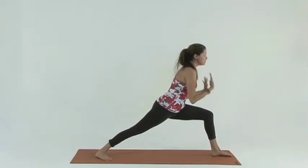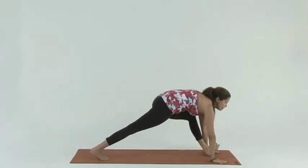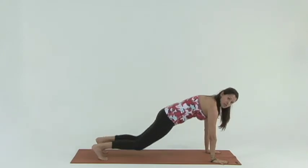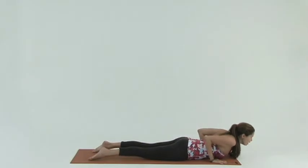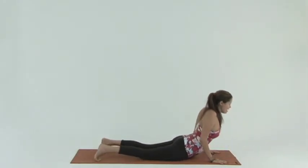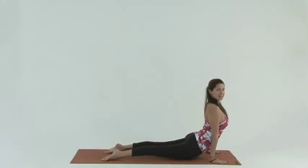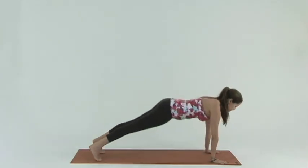Exhale. Spread your fingers really wide. Hands down. Look and step back. Maybe drop to your knees. Chest forward. Elbows in. Chaturanga. Baby cobra. Or go ahead. Upward facing dog. And downward facing dog.